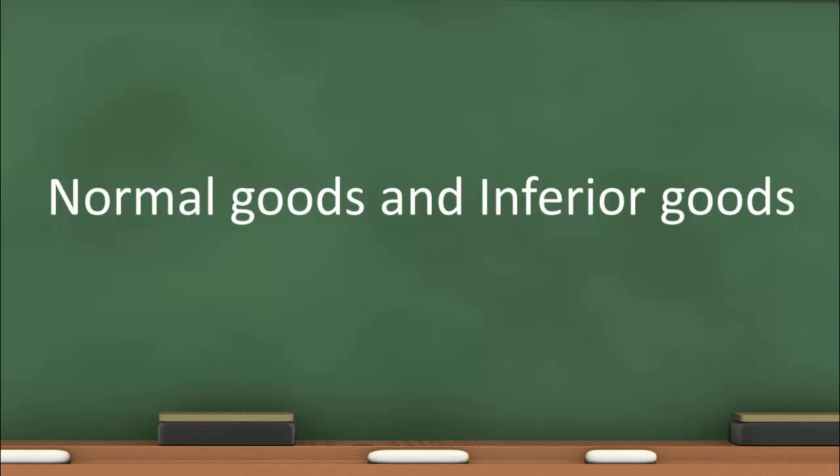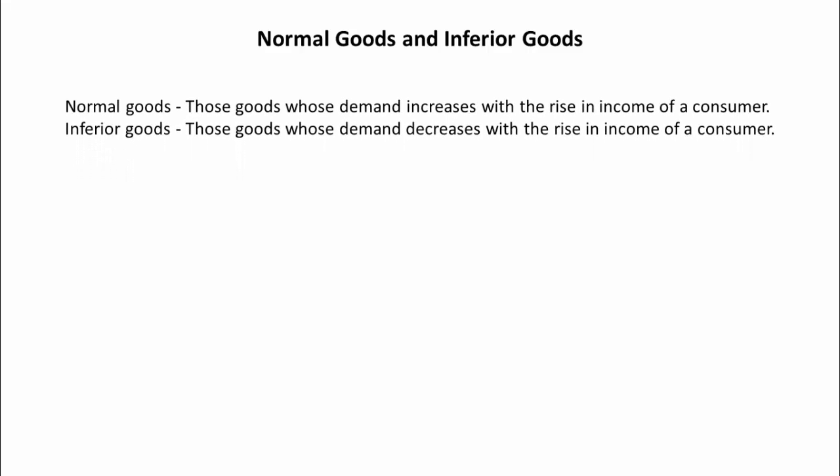In this lecture, we will discuss normal goods and inferior goods. Normal goods are those goods whose demand increases with the rise in income of a consumer. On the contrary, inferior goods are those goods whose demand decreases with the rise in income of a consumer.